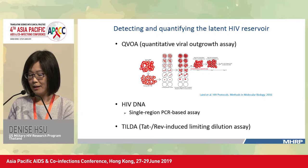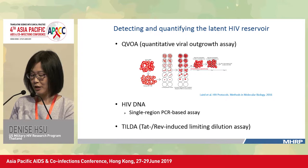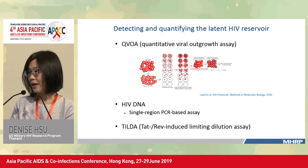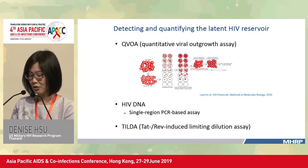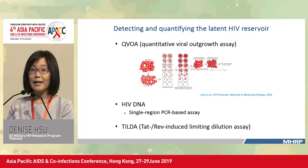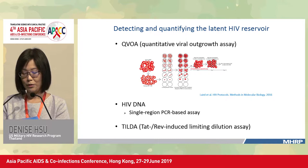In the viral outgrowth assay, resting CD4 T cells are isolated from PBMC and plated in limiting dilution at different concentrations. They are then activated to induce viral transcription and virus production. Donor CD4 lymphoblasts are added at different time points to propagate the infection. The level of activated virus released is measured by P24 ELISA, and the frequency of infected cells in the original sample is estimated by Poisson statistics, expressed as infected units per million.